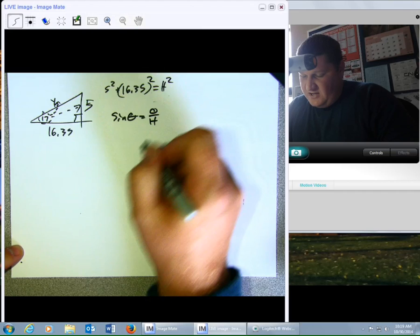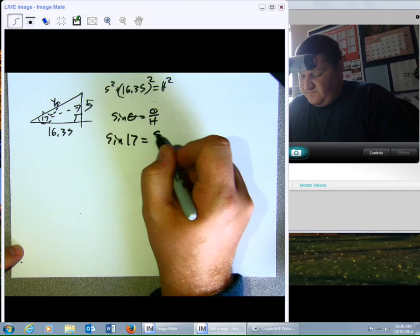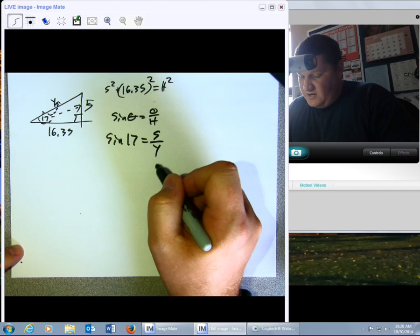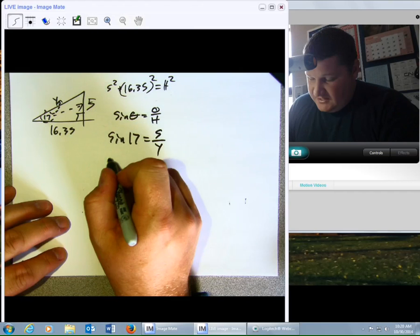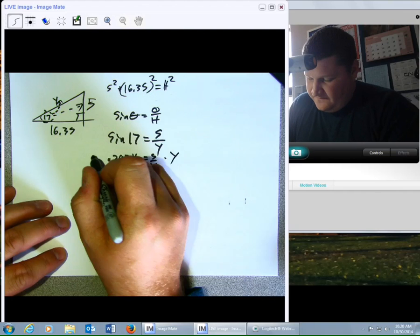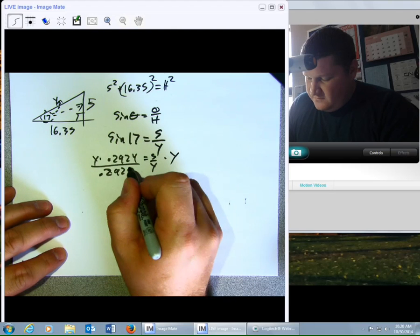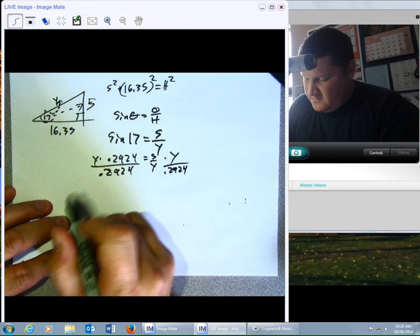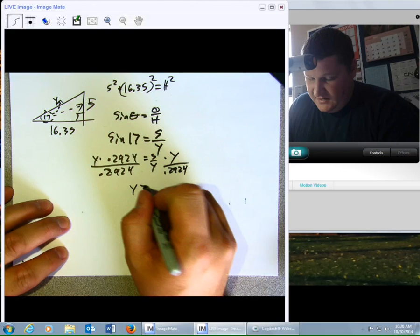So, we come up with sine 17 equals 5 over Y. And I do the same process again. Say sine 17. And I come up with 0.2924 equals 5 over Y. And I say 5 divided by second answer. And I come up with Y equals 17.1.